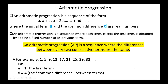Next, we'll discuss two types of important sequences: arithmetic and geometric progressions. An arithmetic progression is a sequence of the form A, A+D, A+2D, ..., A+ND, where the initial term A and the common difference D are real numbers. It is a sequence where each term, except the first, is obtained by adding a fixed number to its previous term — or equivalently, the differences between every two consecutive terms are the same.